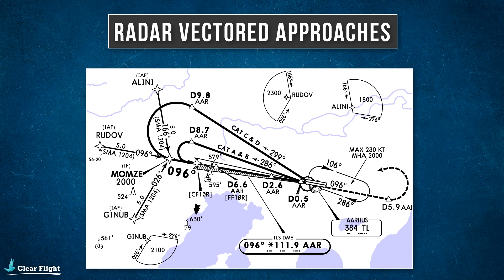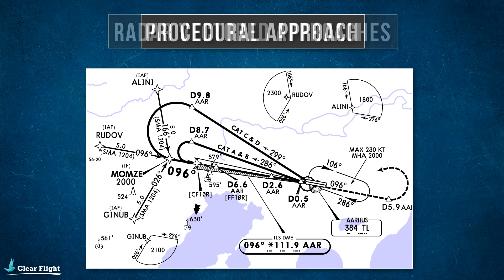Since the controller is using their radar screen to position you onto the approach, they need to have radar capabilities to be able to vector you onto final. If an airport doesn't have radar available, you will have to fly a procedural approach instead.